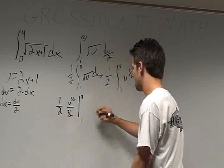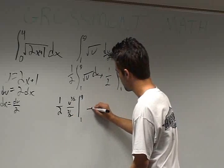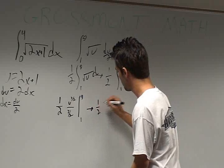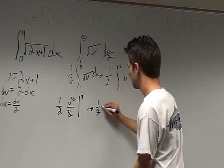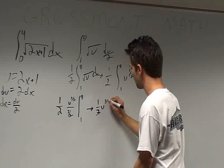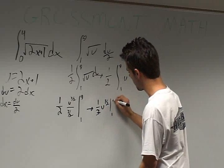Simplifying this, we get 1 third u to the 3 halves, evaluated from 1 to 9.